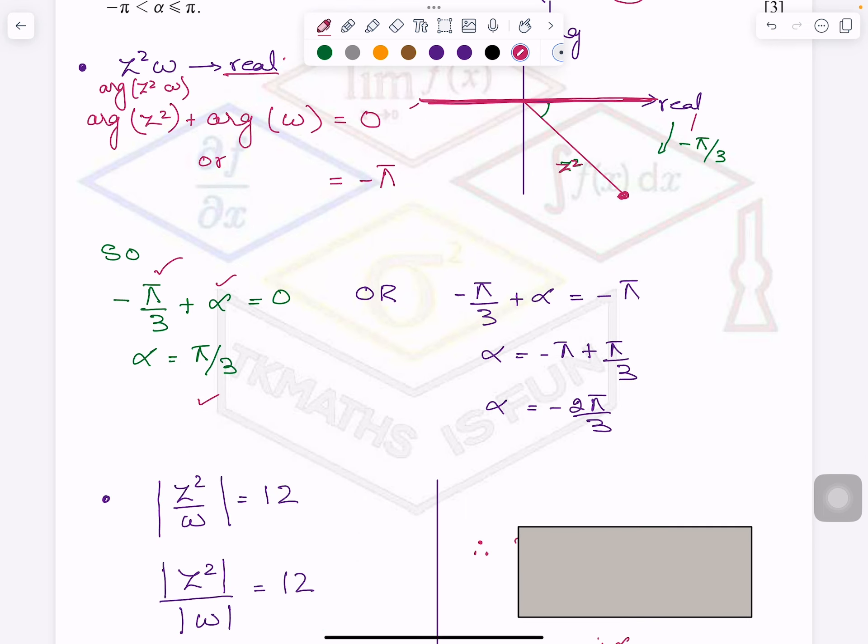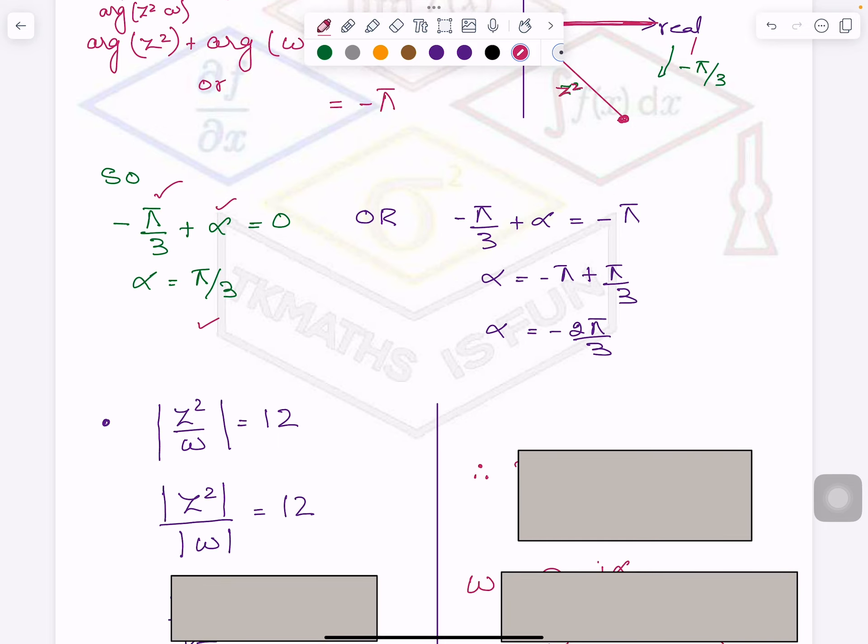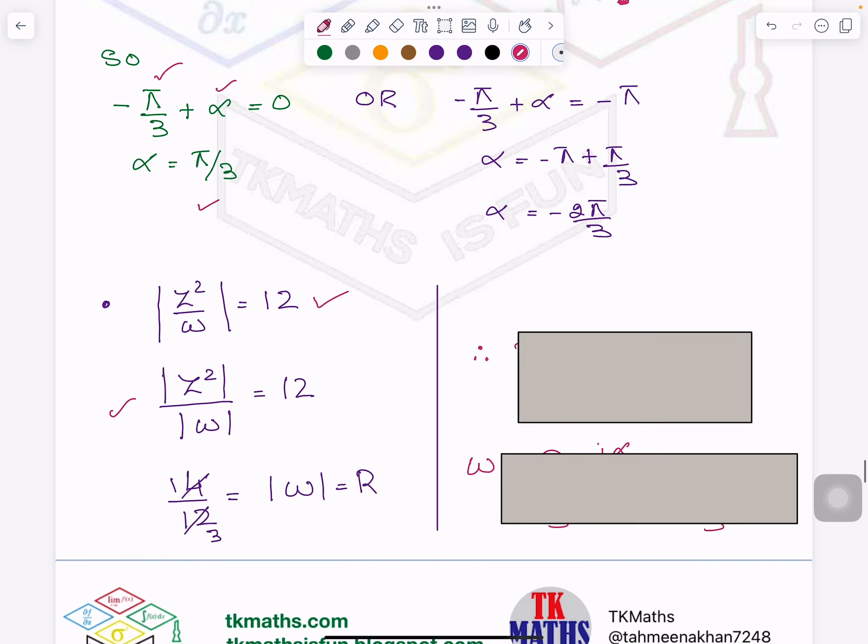So I got here two angles for ω. Similarly, for R, if I see what is given in the question, this is given in the question. And we can split it like this. I have just told you the rules. So, modulus of ω equals 1/3.